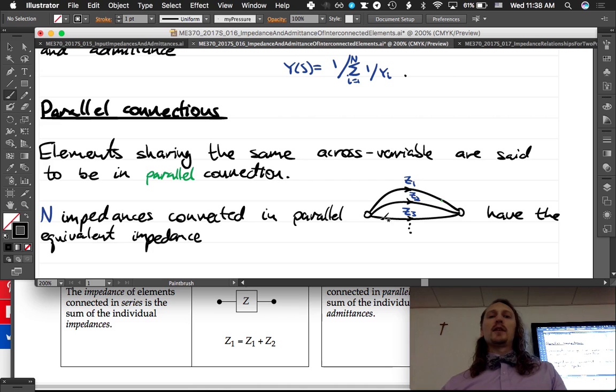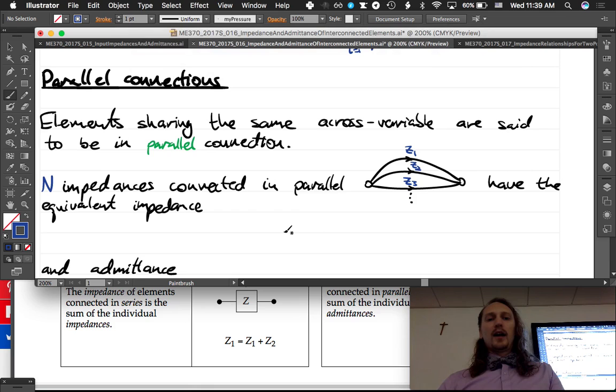So if elements share the same across variable, we say they're in parallel. So these ones are in parallel. N impedances connected in parallel, sharing the same across variable, have the equivalent impedance. So I'm going to write Z_s equals, and then I want you guys to tell me the next thing to write.